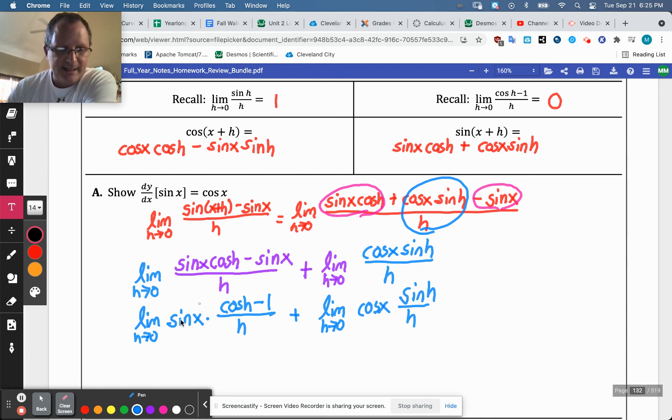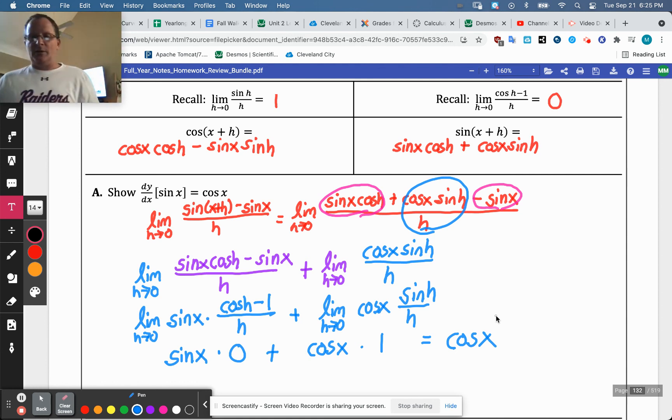All right, so this is going to be, and if I go ahead and do both of these, this will be sine x, because it has nothing to do with h, but this is times zero. And then plus, and this one, that's going to be cosine x, because again, it has nothing to do with h, but then that's times one. And so this entire thing ends up being cosine x. So that means then that the derivative of sine is indeed cosine.